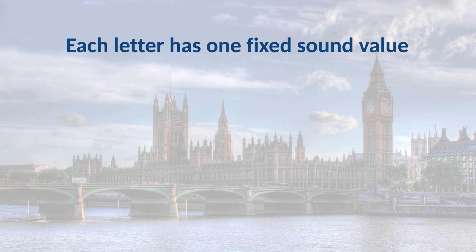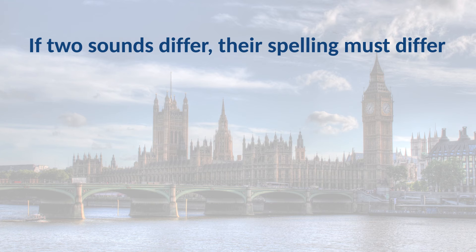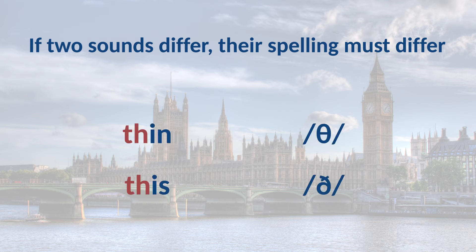The IPA is unambiguous. Each letter has one fixed sound value. In English, C stands for S in 'cell' but for K in 'Celtic.' In the IPA, the S sound is always written as S, and the K sound is always written as K. In the IPA, if two sounds differ, their spelling must differ. TH in English can stand for TH like in 'thin' and TH like in 'this' — the IPA employs two different symbols here.